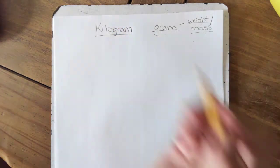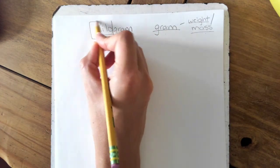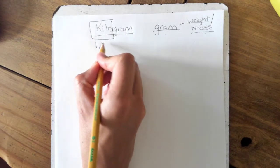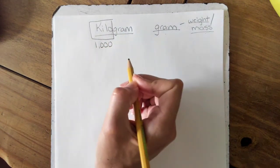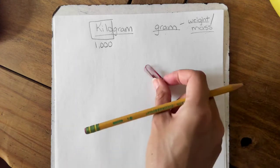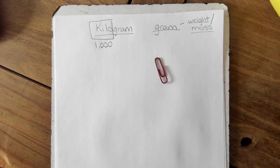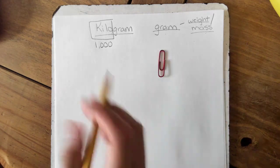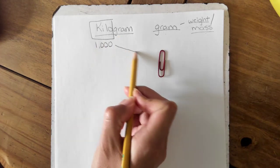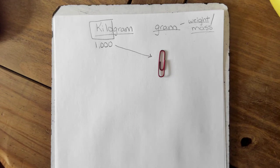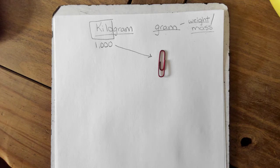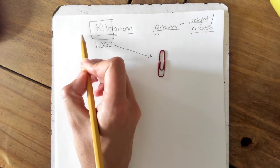When we see kilogram and gram, we see kilo, and we know that kilo means one thousand. So this paper clip—if you've ever held a paper clip, then you know exactly what a gram feels like. A paper clip weighs one gram. Now a kilogram is one thousand of those paper clips. So if I took one thousand grams or one thousand paper clips, that would equal one kilogram.